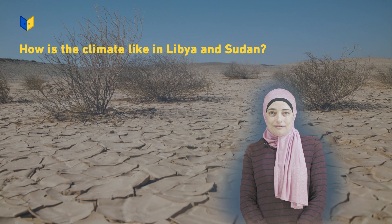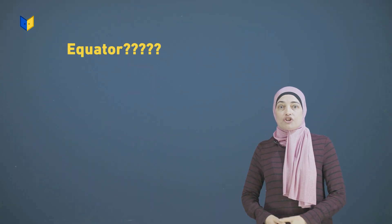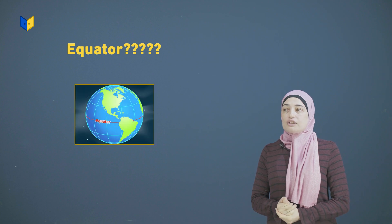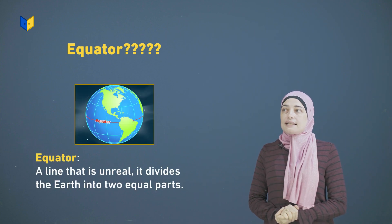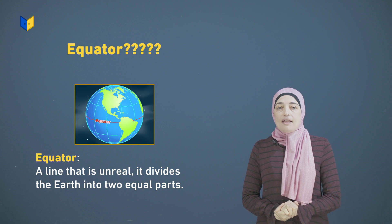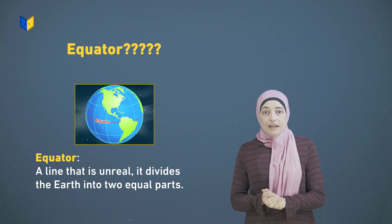Now try to think of the equator. What is the meaning of the equator? As you can see there, it is a line. By the way, is it a real or unreal line? It's unreal.